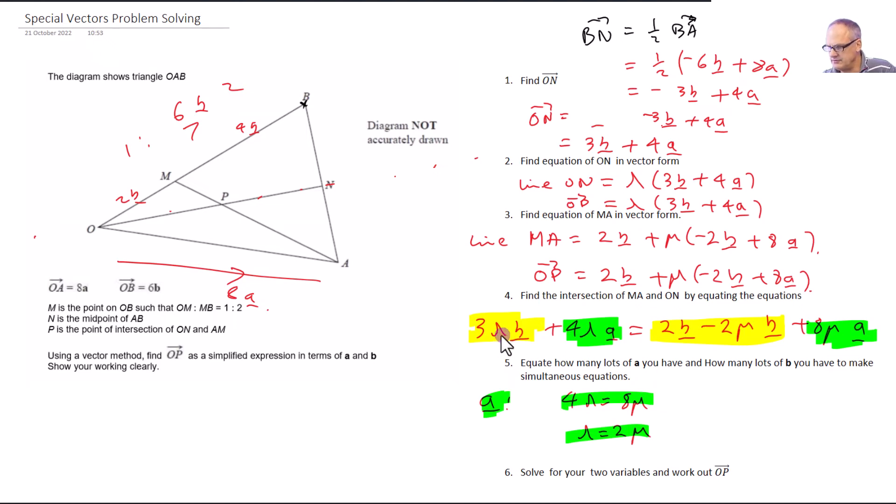Moving on to the yellow bits, so the B bits, and we know that 3 lambda must equal, there's 2 lots of B, so that's 2 minus 2 mu lots of B, 2 mu. So we're just looking at the B bits here.